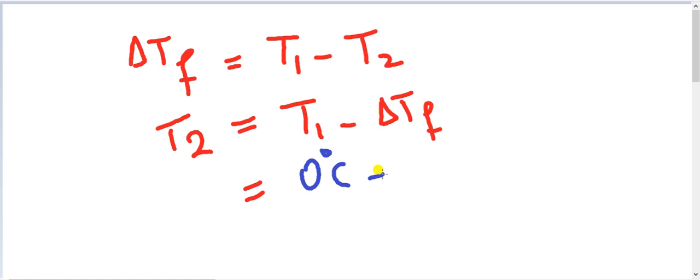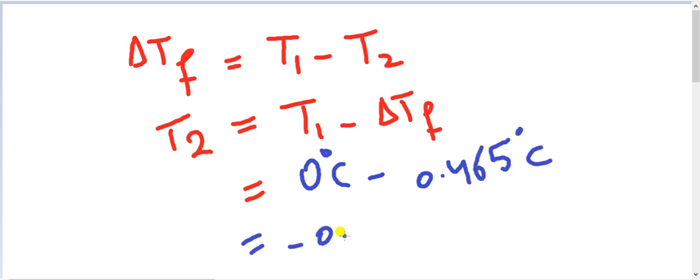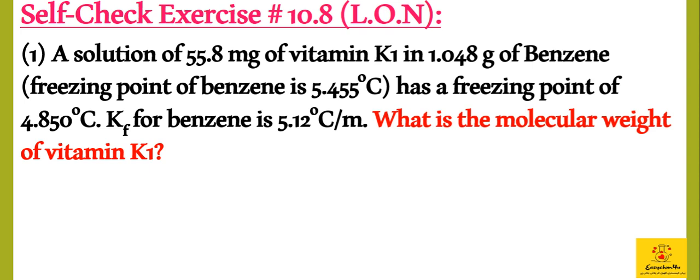Now the next problem: 1.048 grams of a compound dissolved in benzene has a freezing point of 4.850 degrees centigrade. K for benzene is 5.12. What is the molecular weight of vitamin K1? Students, this is simple.